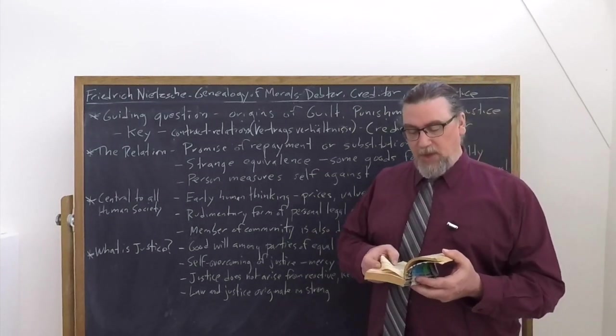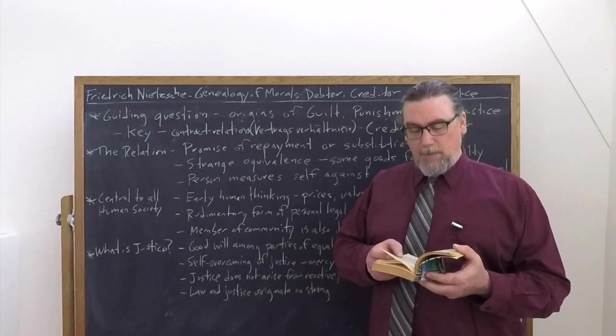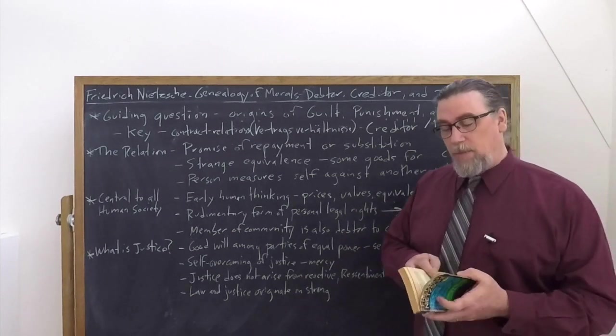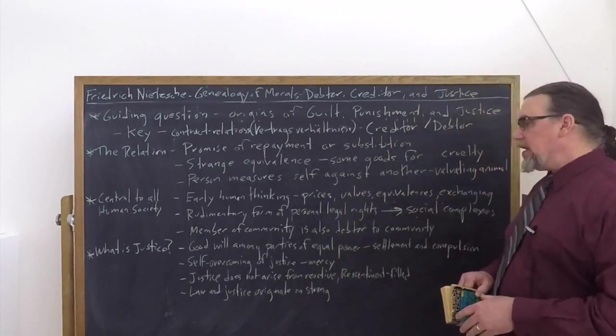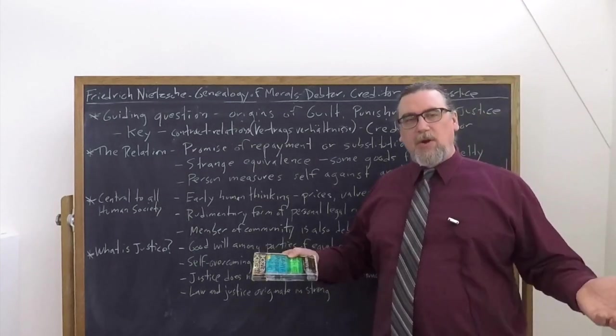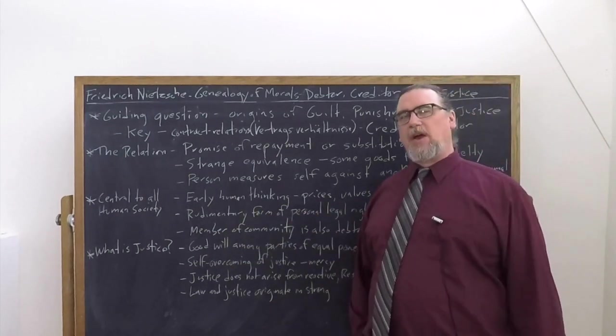Therefore, he's not only deprived of all these advantages and benefits, he is also reminded what these benefits are really worth. How is he reminded? By the wrath of the disappointed creditor, the community. Punishment, like he says, is simply a copy of the normal attitude towards a hated, disarmed, prostrated enemy who has lost not only every right and protection, but all hope of quarter as well. And then he talks about how later on within the development of this, the community can actually afford to be very merciful.